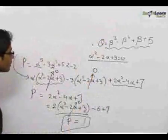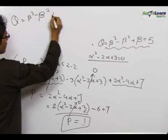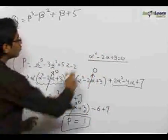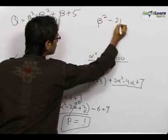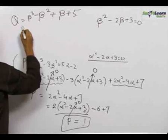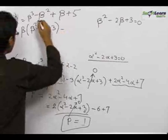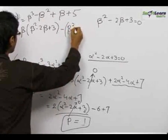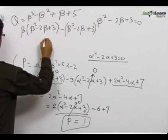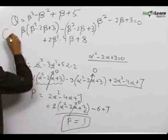Now in similar fashion we reduce q = β³ - β² + β + 5. Since beta is also a root of the quadratic equation, β² - 2β + 3 = 0. We reduce the cubic term as β(β² - 2β + 3), then reduce the square term by writing β² - 2β + 3. The remaining terms give us 2β² - 4β + 8.